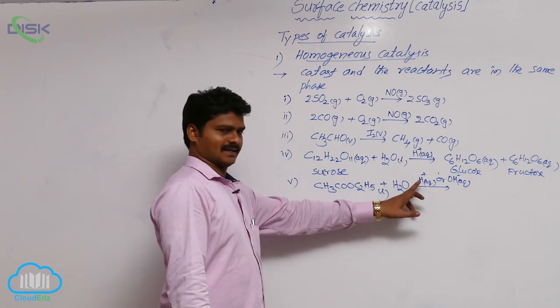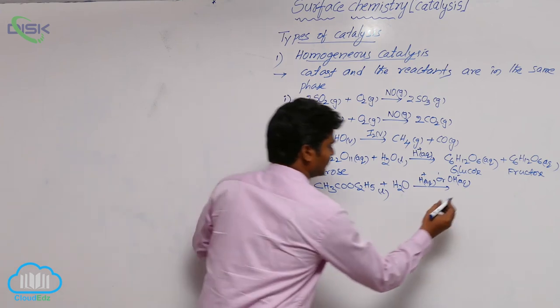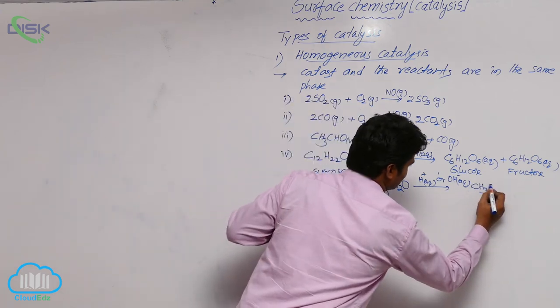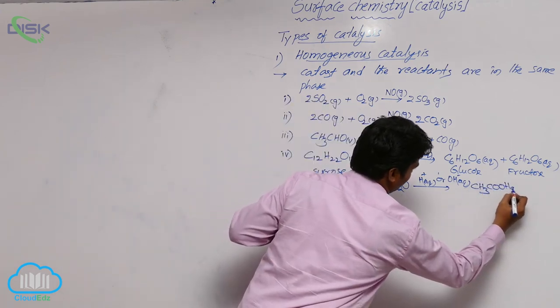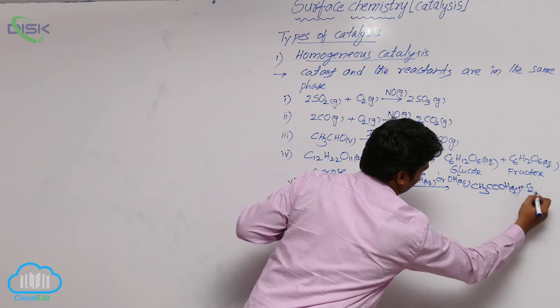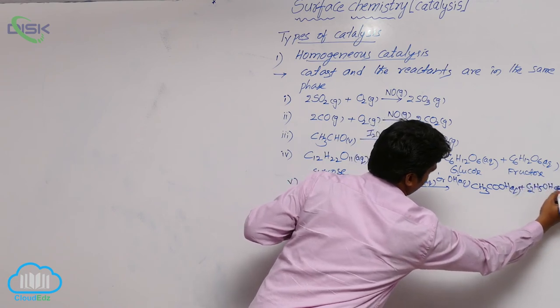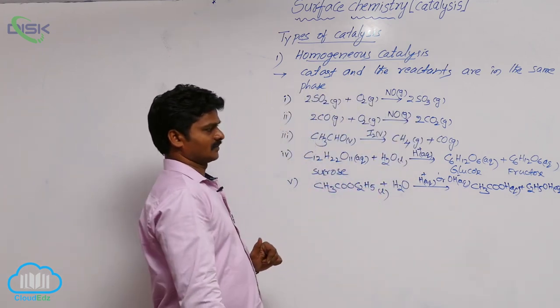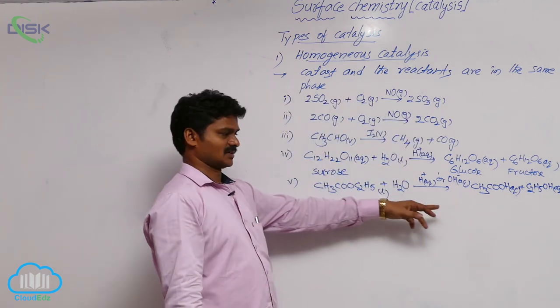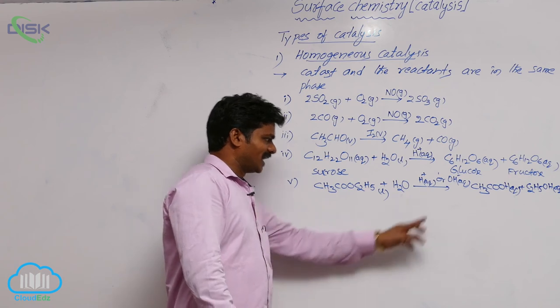If acid is added, used as catalyst, then we will get CH3COOH aqua plus ethyl alcohol, C2H5OH aqua. Ethyl alcohol, acetic acid, those are the products.